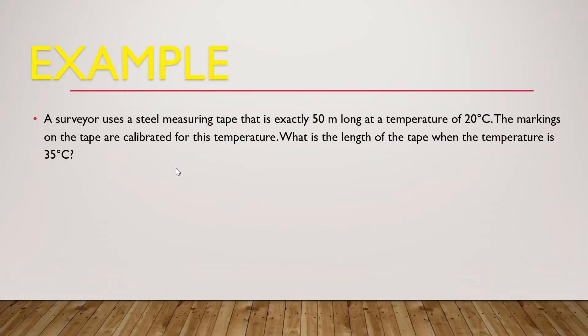Example for thermal expansion: a surveyor uses a steel measuring tape that is exactly 50 meters long at a temperature of 20 degrees Celsius. The markings on the tape are calibrated for this temperature. Now, what will be the length of the tape when the temperature is increased up to 35 degrees Celsius? This is very simple, this is an example of linear thermal expansion. The solution is: the equation for linear thermal expansion is delta L = alpha L_0 delta T, where alpha for steel is constant and that is equal to 1.2 times 10 to the minus 5 per degree Celsius.